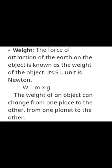Weight: the force of attraction of the earth on an object is known as the weight of that object. Its SI unit is Newton. The formula for weight is W = mass × acceleration due to gravity. Weight of an object can change from one place to another because it depends on gravitational acceleration, which is changeable.